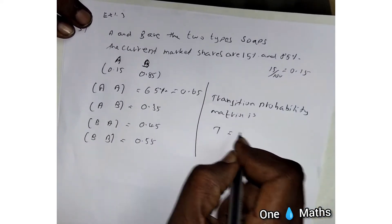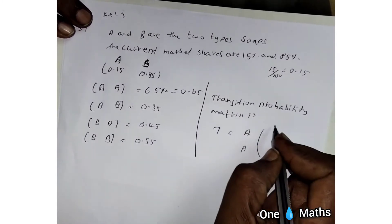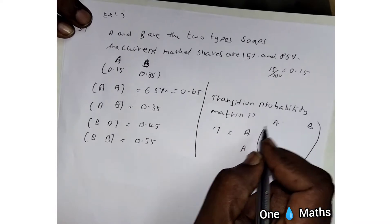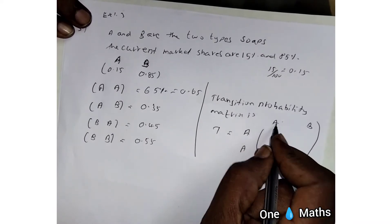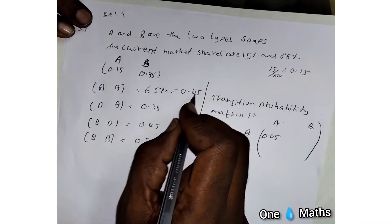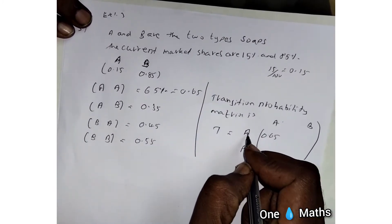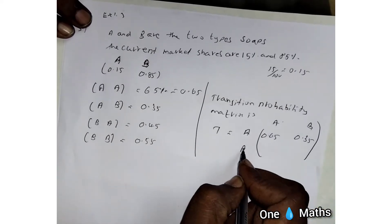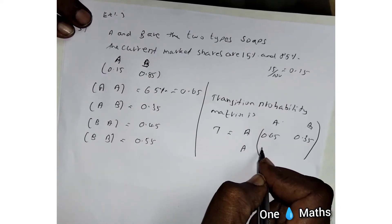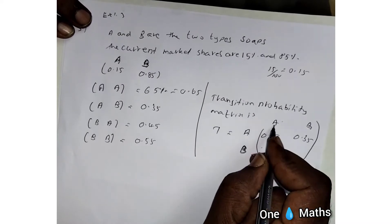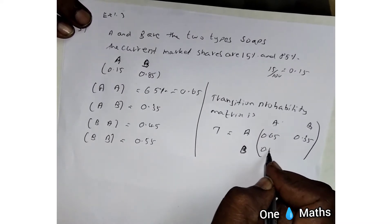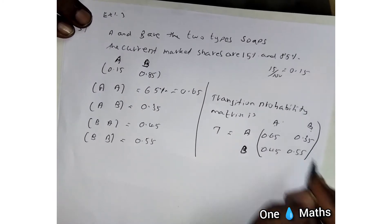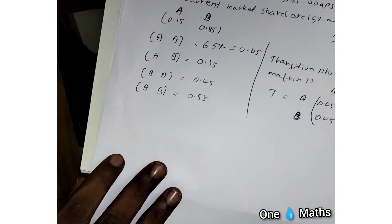We take the transition matrix T with entries: A to A is 0.65, A to B is 0.35, B to A is 0.45, and B to B is 0.55. So the transition matrix T is: [0.65, 0.35; 0.45, 0.55].